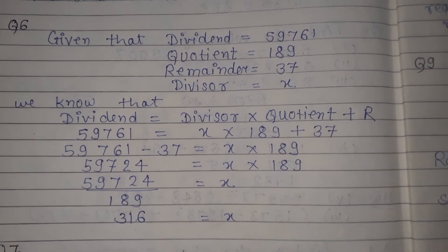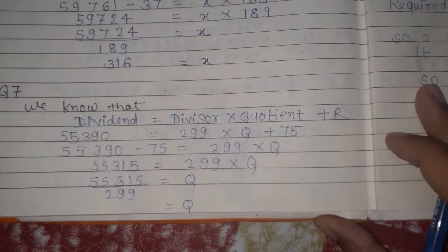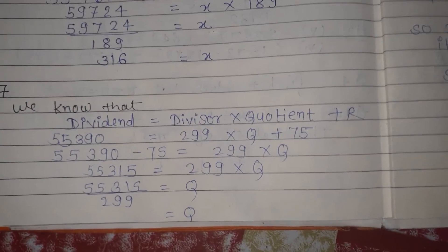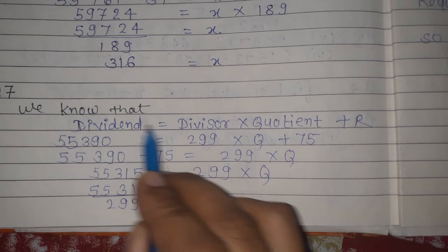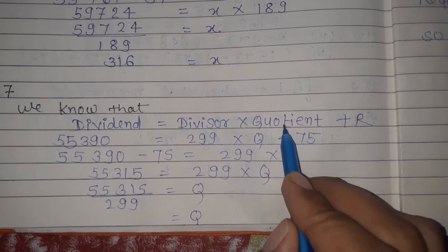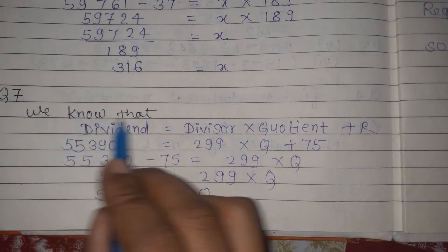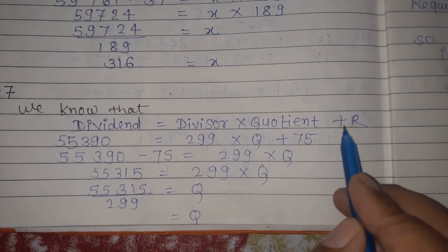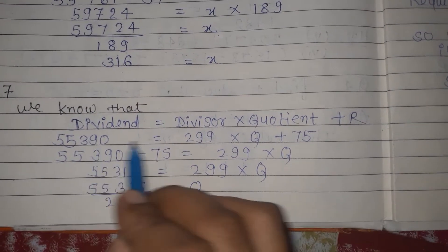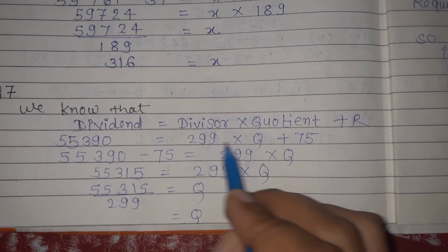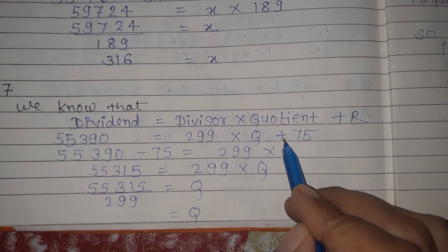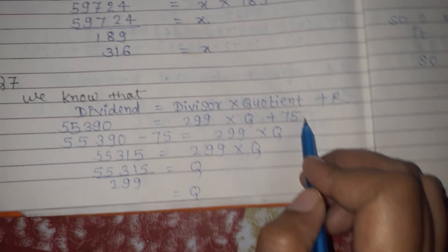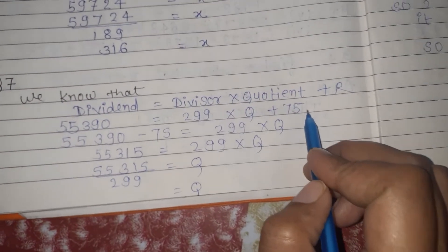Now let's see question number 7. We have to find the values given — dividend, divisor, and remainder — and we have to find the quotient. Let us solve this question and find the value of quotient.